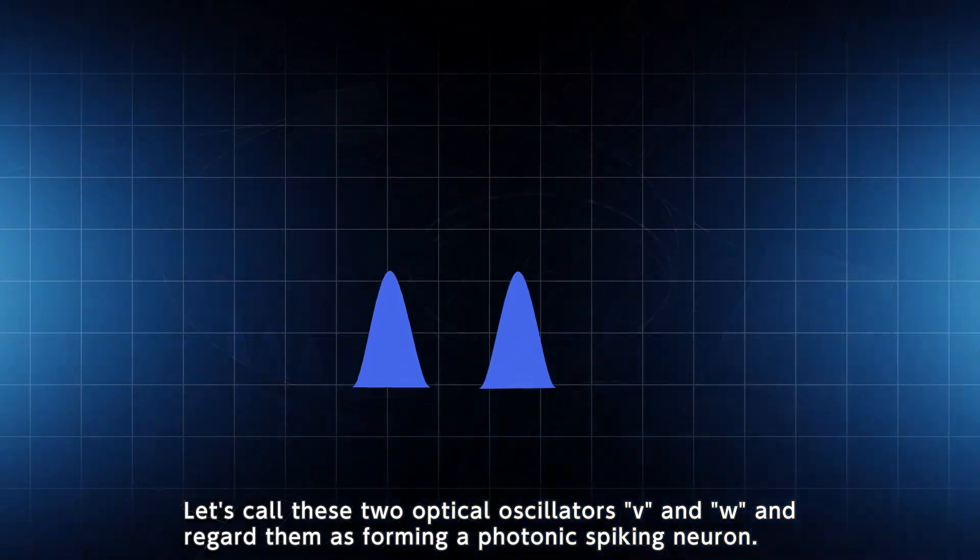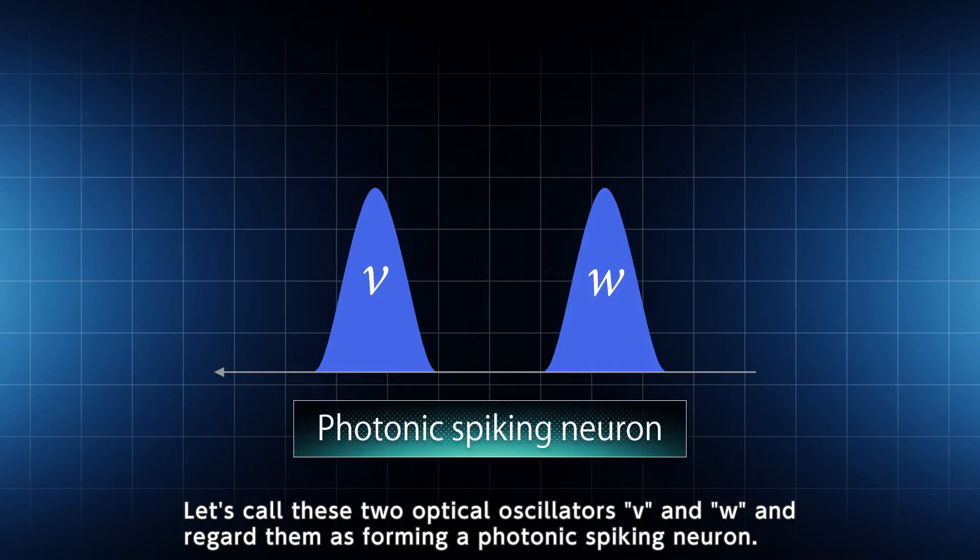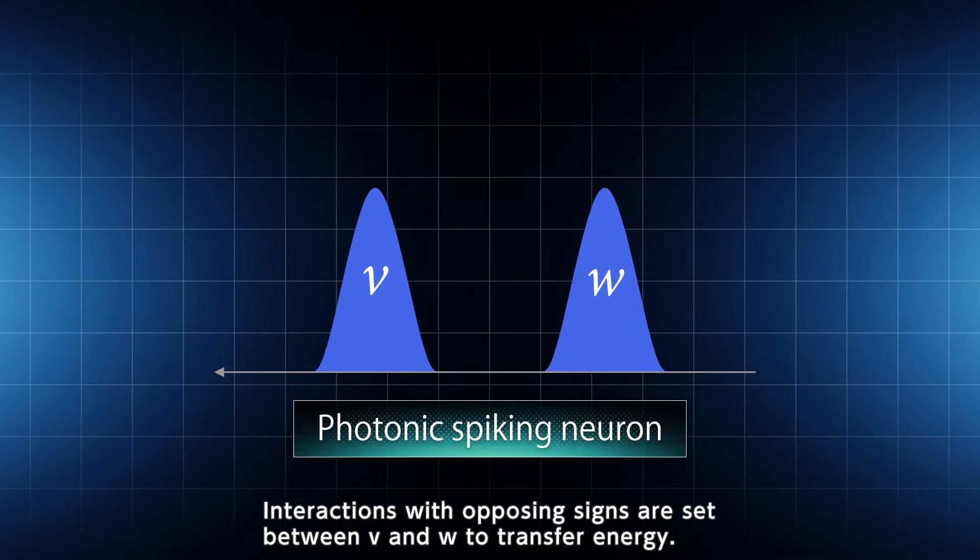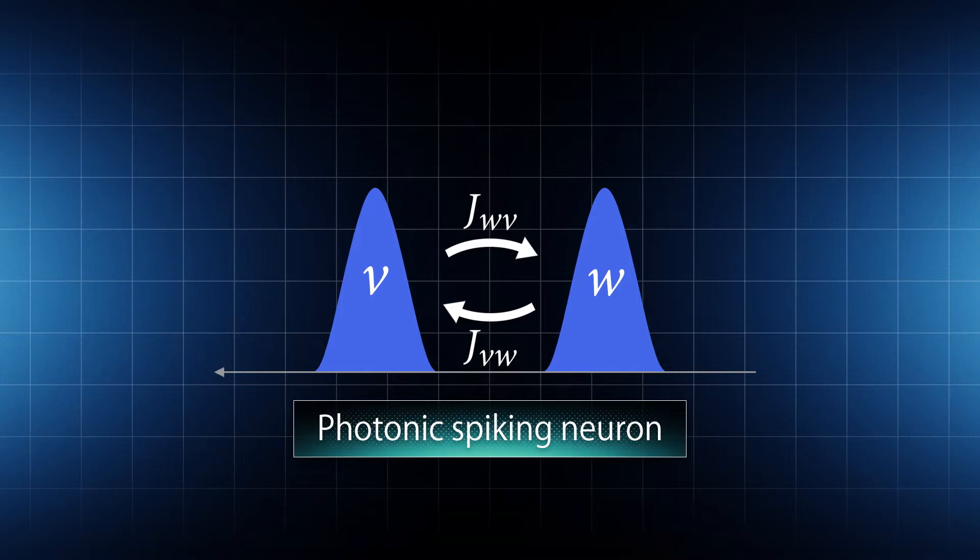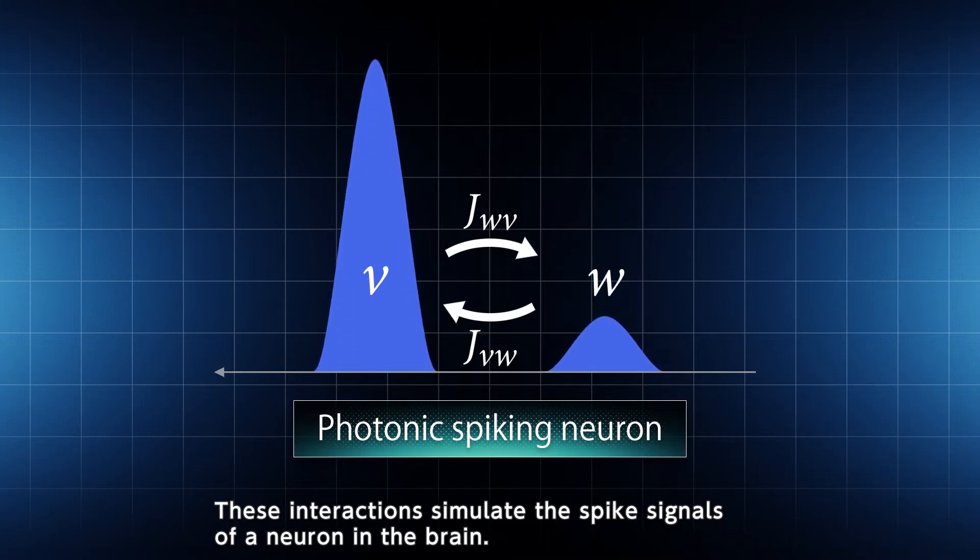Let's call these two optical oscillators V and W and regard them as forming a photonic spiking neuron. Interactions with opposing signs are set between V and W to transfer energy. These interactions simulate the spike signals of a neuron in the brain.